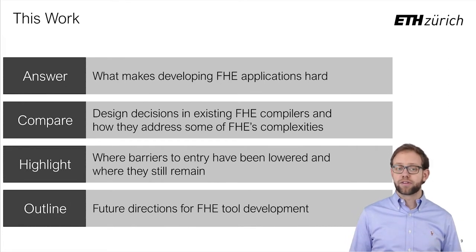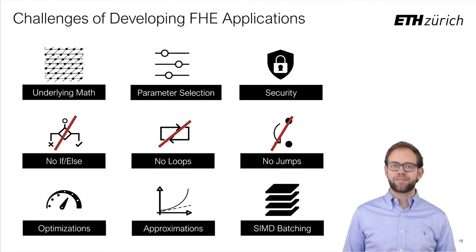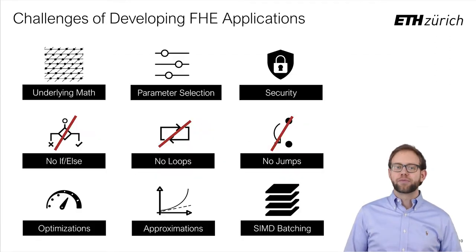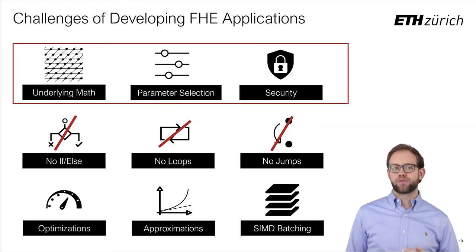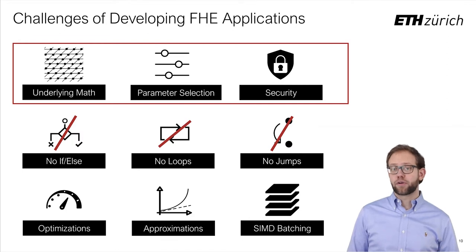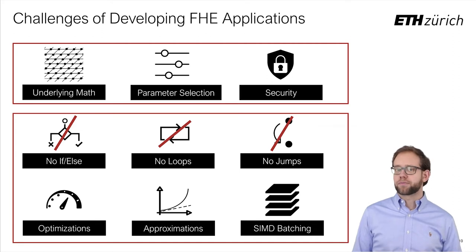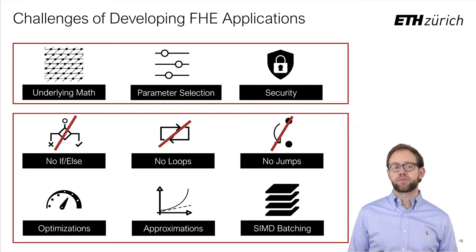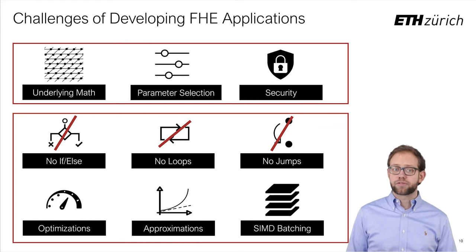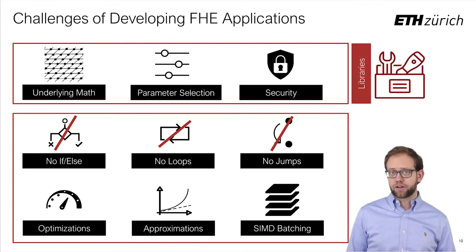In order to evaluate the different tools, we first need to understand the challenges they're trying to address. While FHE poses a lot of challenges, we can roughly categorize them into two groups. First, we have cryptographic challenges that are closely related to the specifics of current FHE schemes — for example, selecting parameters that are both secure and efficient for the given application. On the other hand, we have higher-level challenges that arise due to the unusual computation model inherent in the definition of FHE, including the lack of branching instructions and the need to exploit clever approximations and optimizations to achieve the full potential of FHE.